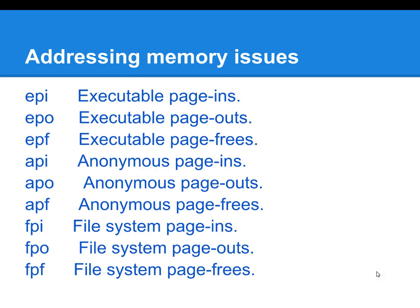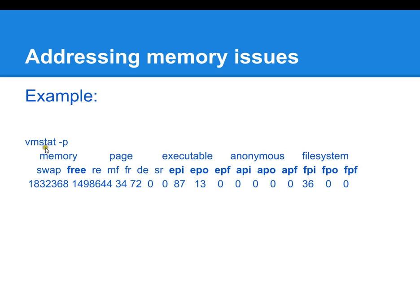vmstat -p is a way of getting valuable page-in and page-out information. There are three categories: executables, anonymous, and file system. All of these categories have page-ins, page-outs, and page-free. Here's an example of a vmstat -p command. You can see the three categories — executable, anonymous, and file system — as well as the amount of swap space you have and how much is free.